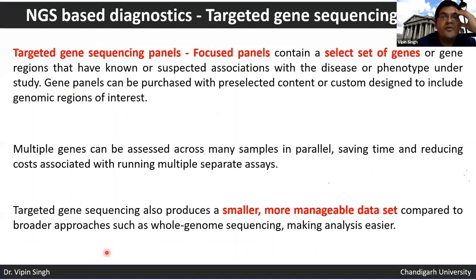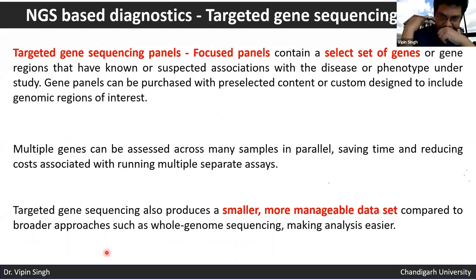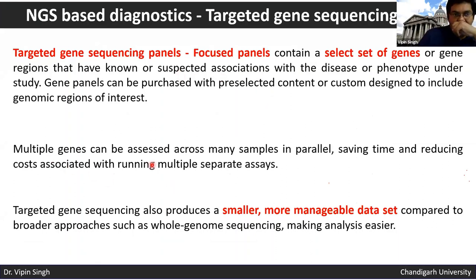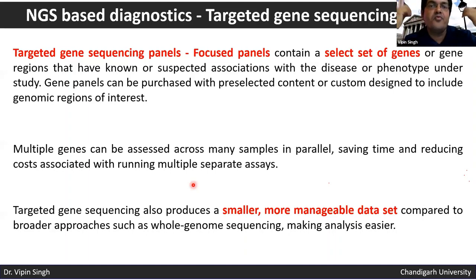You can also do targeted panels — if you know that certain mutations or positions in the human genome are important for a disease such as cancer, you can sequence only those regions. Multiple genes can be assessed across many samples in parallel, saving time and reducing cost associated with running multiple separate assays. This produces smaller, more manageable, and more significant data compared to whole-genome sequencing.